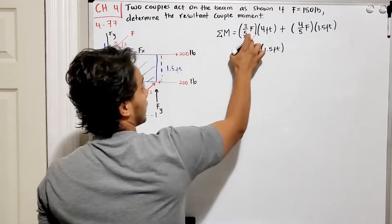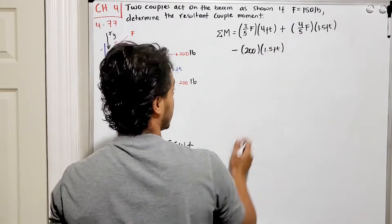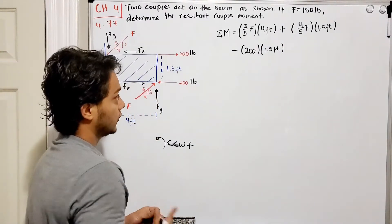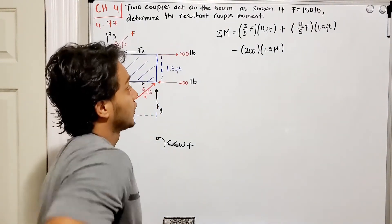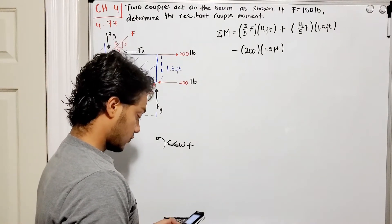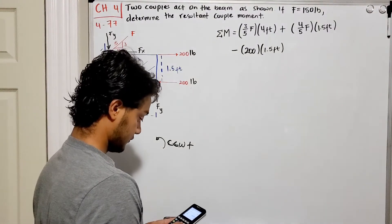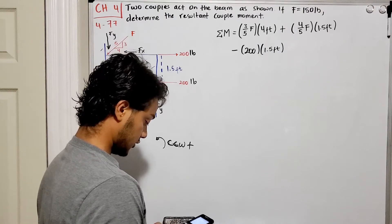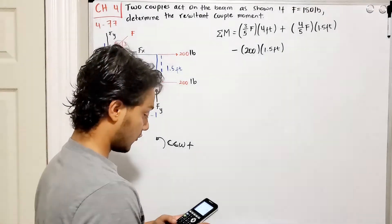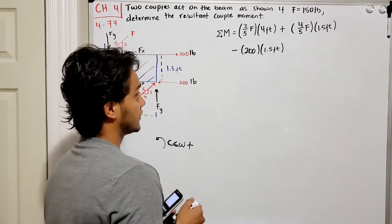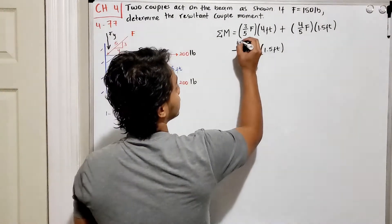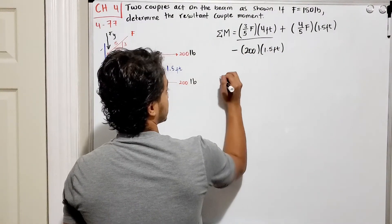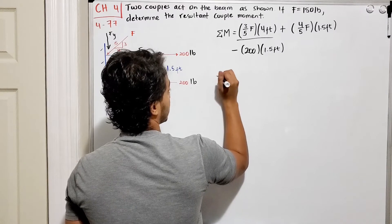If we remember F is equal to 150, we can calculate that it's going to be 3 out of 5 multiplied by 150 and also multiplied by 4, which will give me 360. So the sum of my moments is going to be 360 pound-feet.